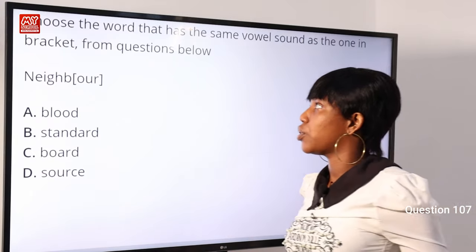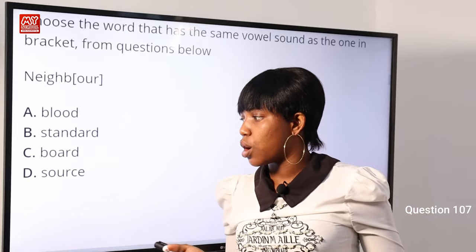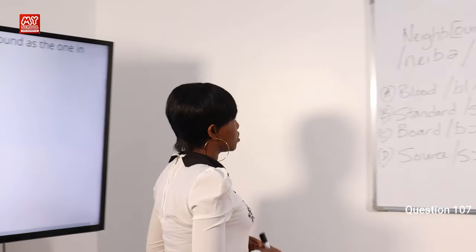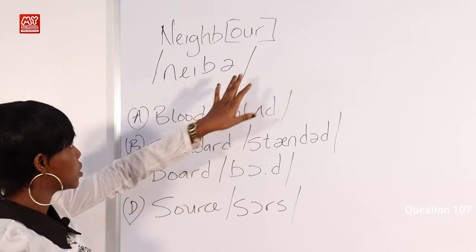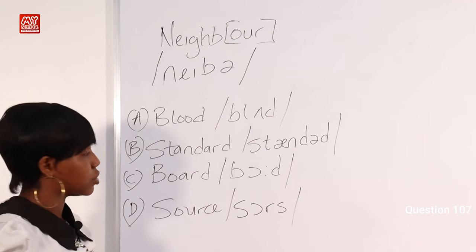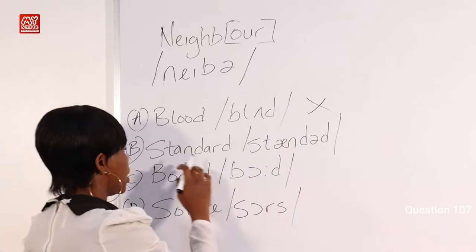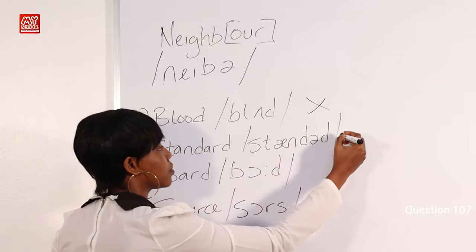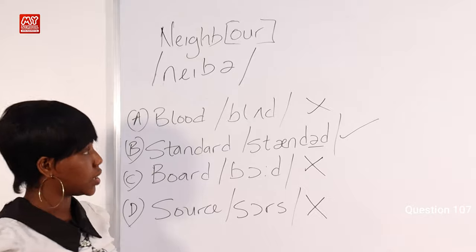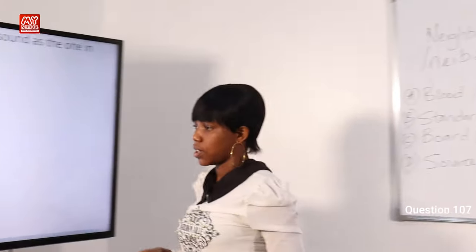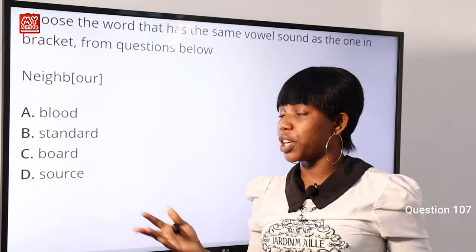Question 107: Choose the word that has the same vowel sound as the one in brackets. The word is 'neighbor,' with the letters 'our' in brackets, transcribed as the schwa sound. Options: A) blood, B) standard, C) board, D) source. The schwa sound is not present in 'blood,' 'board,' or 'source.' It is present in the word 'standard.' Option B) standard is the correct answer.